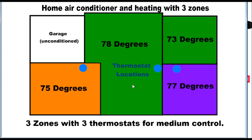This is a home air conditioner and heating system with three zones. This is for medium control because you basically have three areas that you control. You have one uncontrolled area, and if you've noticed, the temperature dropped a little bit in this particular part of the structure.